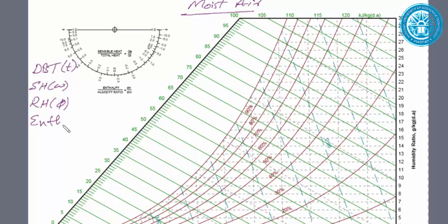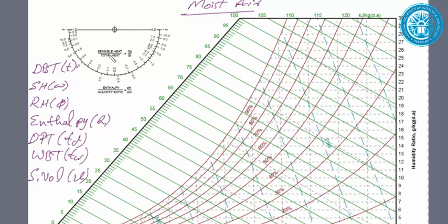Enthalpy (H), dew point temperature, wet bulb temperature, and finally specific volume. So these are the things that we can read from this psychrometric chart. If I know any two of these properties, I can find the rest.